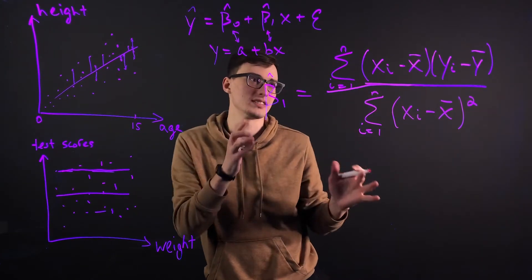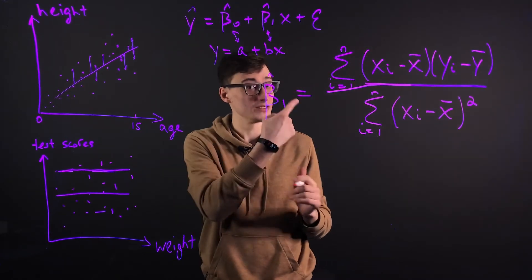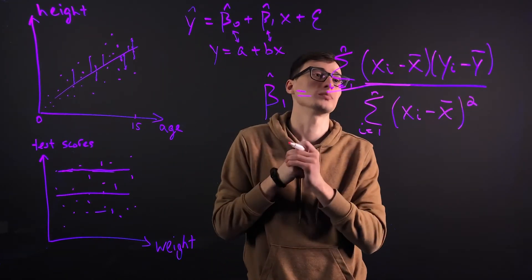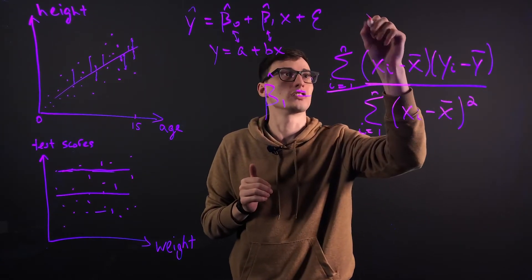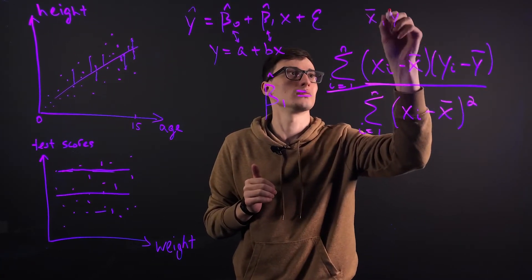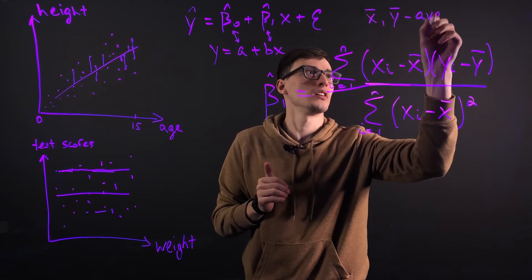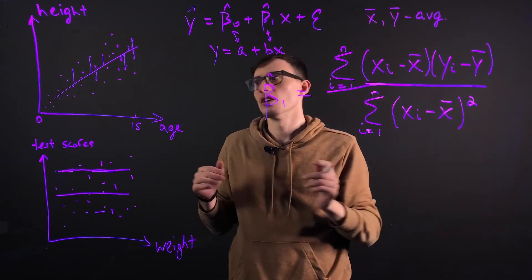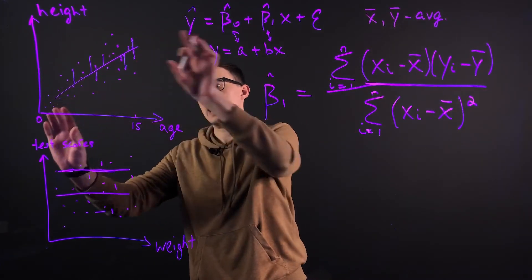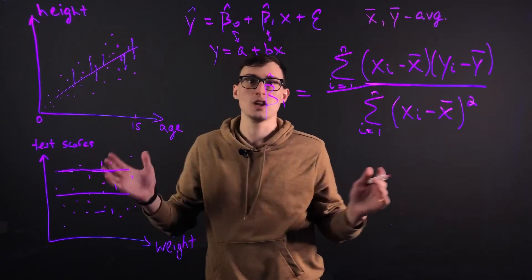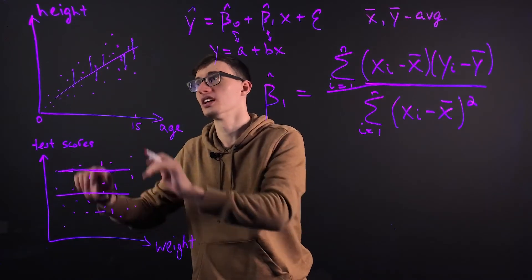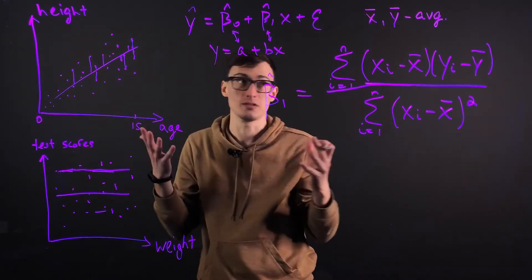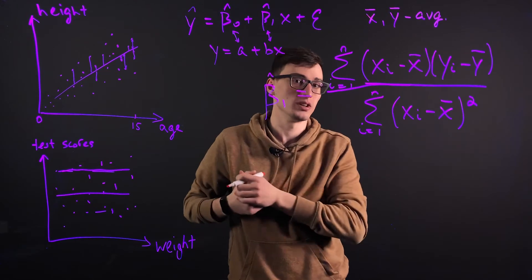Now, let's break this down. First of all, if you're not sure how to read sums, then check out the video that we did on sums. I think it's explained pretty well. And x bar and y bar here are just the averages, pretty simple. So if we take all the ages or all the weights and we average it, that's what x bar is. And the same with y bar, if we take all the test scores and we take all the heights and average them, that's what it is, pretty straightforward.